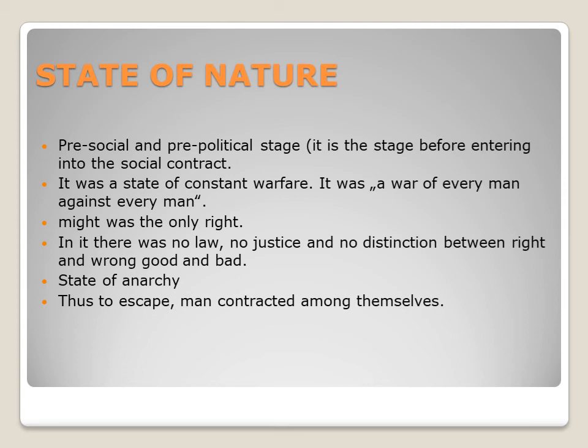According to Hobbes, man wanted peace, but his fear of others, his anxiety to retain what he already had, and his never-ending power desire meant he would get into conflict. So, to escape from this state of nature, people would have to contract among themselves — they would get into a covenant, form an agreement, and a civil society would be formed. They would appoint a sovereign ruler who would be absolute and supreme in his jurisdiction.